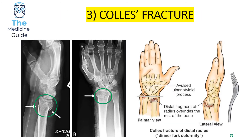This is an example of a Colles' fracture — a fracture of the distal third of the radius. A useful way to remember it is that in a Colles' fracture, you've 'collidedʼ the distal third of the radius. Another useful way of remembering what a Colles' fracture looks like on an x-ray is the dinner fork deformity: on a lateral view, the hand will appear similar to a dinner fork.